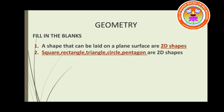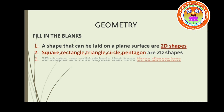Next one: what are the examples for 2D shapes? Square, rectangle, triangle, circle, and pentagon. So these are all some examples for 2D shapes.